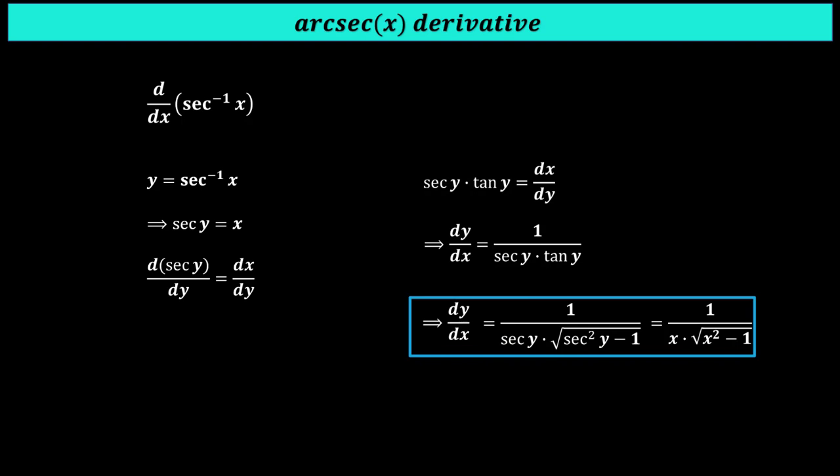The sign of the derivative will depend upon the sign of x because the quantity under the square root is never negative. It means when x is positive, the derivative or slope is positive. And on the other hand, when x is negative, the derivative or slope is negative.